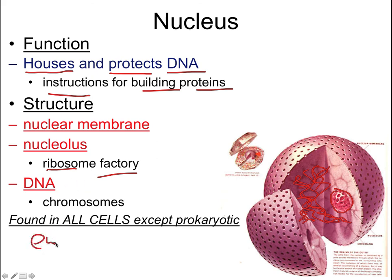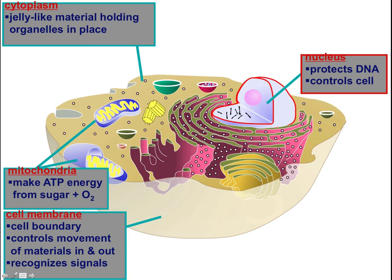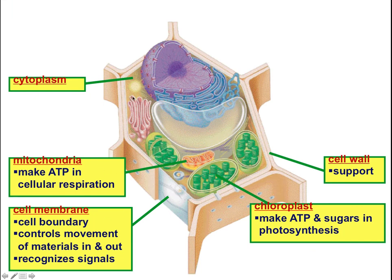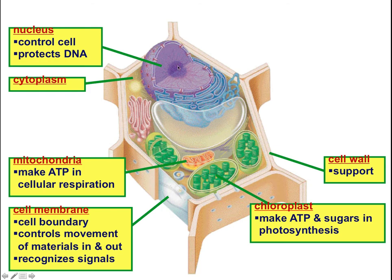Sometimes the DNA is in chromosomes. Nuclei are found in all cells except prokaryotic cells. So if it has a nucleus, it is a eukaryotic cell — that includes plant cells, animal cells, fungus cells, and so on. In a plant cell, the same parts apply: there's the nucleus with its DNA and nucleolus.